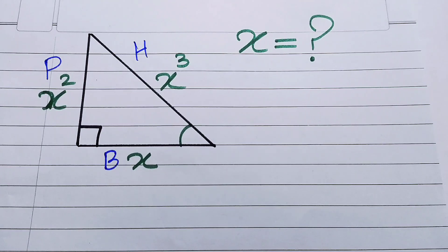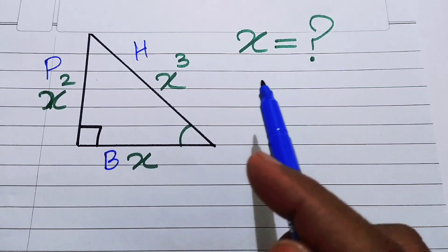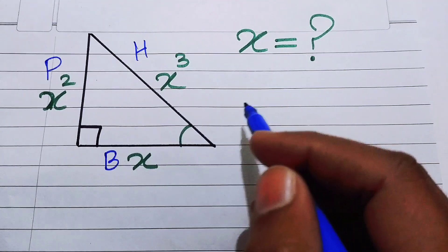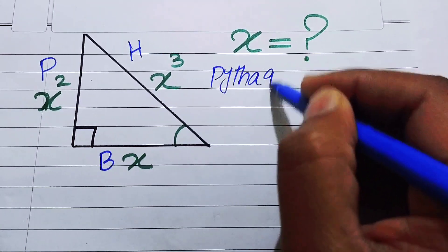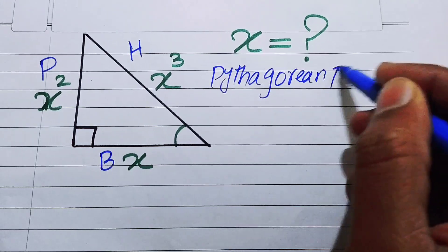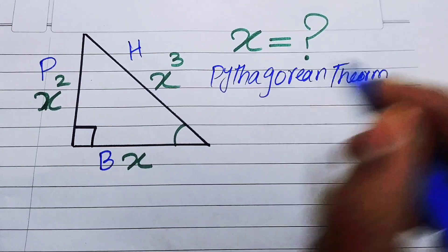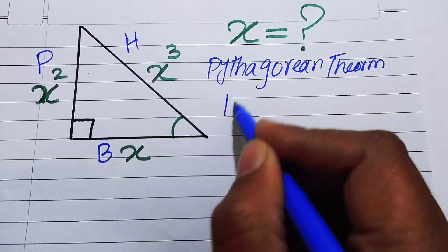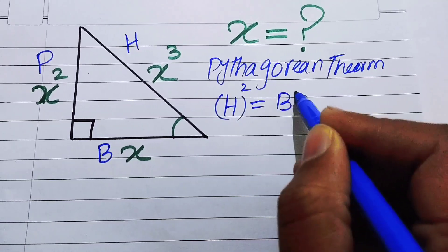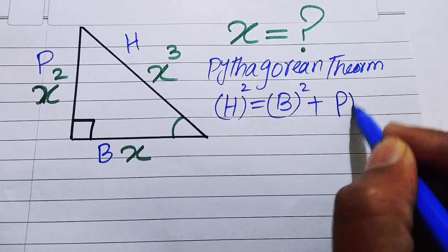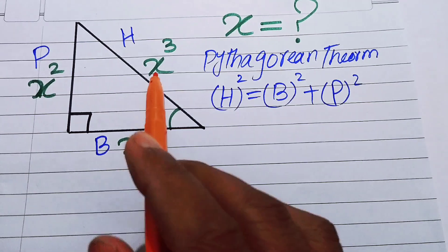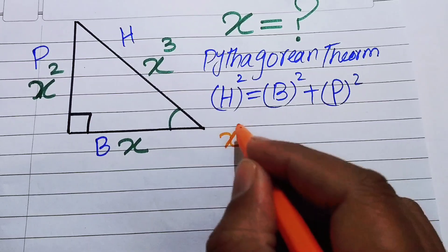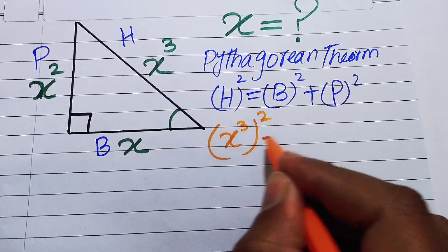Our target is to find the value of x. We apply the Pythagorean theorem. According to this theorem: hypotenuse² = base² + perpendicular². Focusing on the given diagram, our hypotenuse is x³, so we write x³ squared equals...